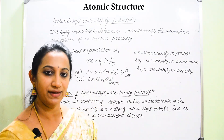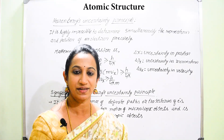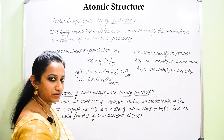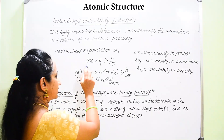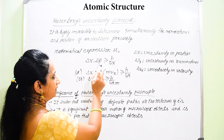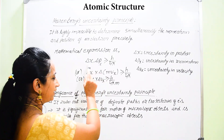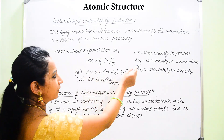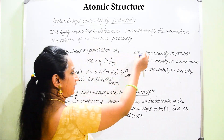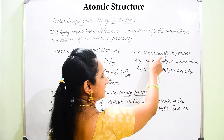Here, delta x stands for change in position. Delta px: here x stands for position and p stands for momentum. So delta x is the uncertainty in position — that is, what error you will get by finding the position of any moving electron. That is, uncertainty in position.